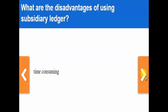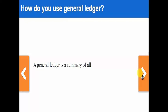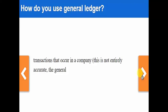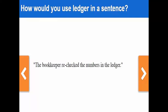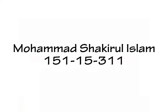One disadvantage of using a subsidiary ledger is that it is too time-consuming. The general ledger is a summary of all transactions that occur in a company. The general ledger shows you the balance and debit and credit to each specific account, but the bookkeeper records the numbers in the ledger.